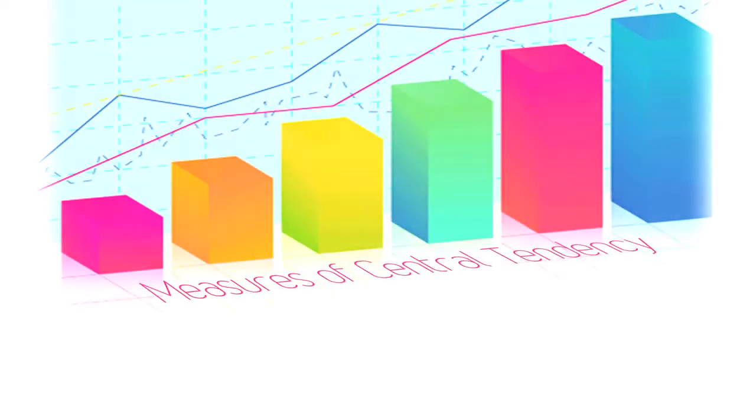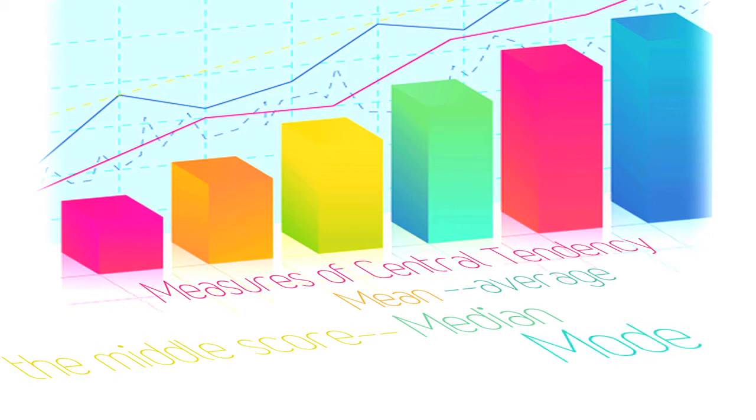In order to organize the information, we use the measures of central tendency. That's the mean, or the average, the median, the middle number, or the mode, the most frequently occurring score.